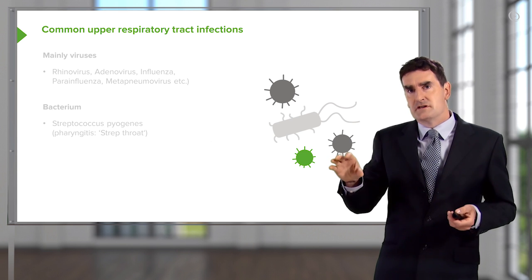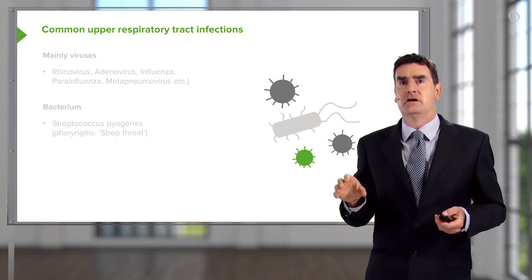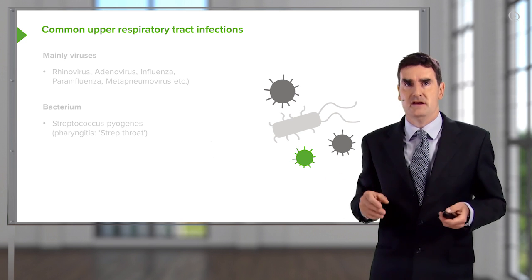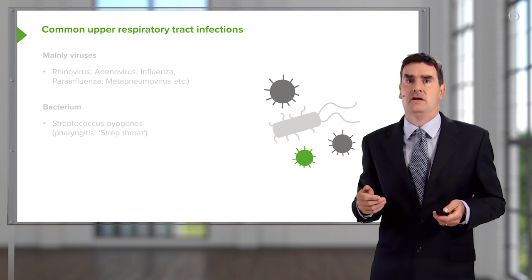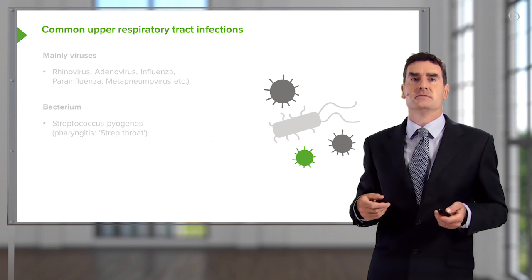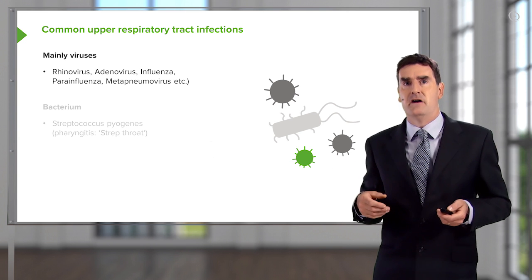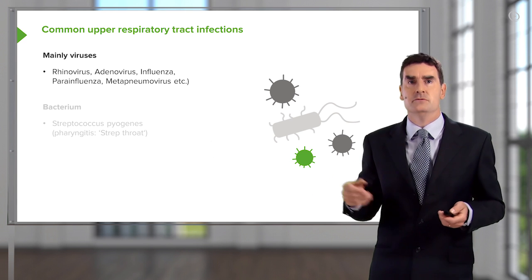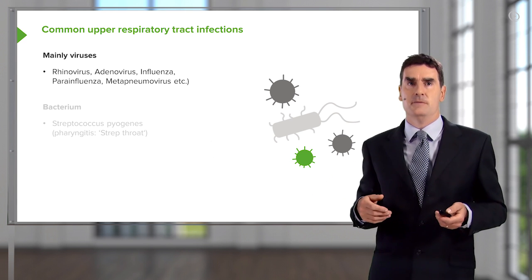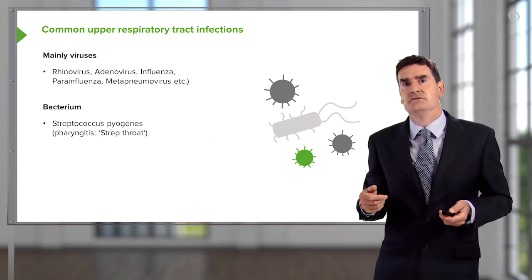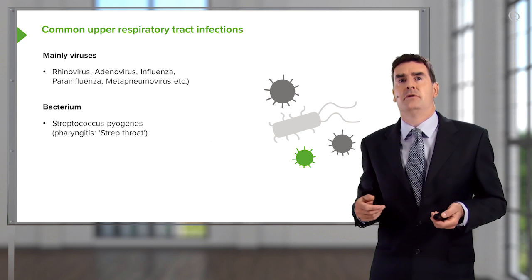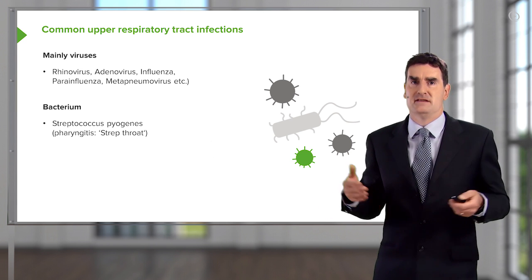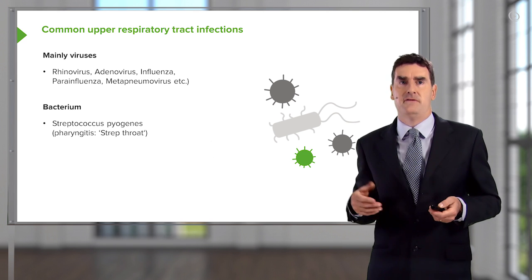Before discussing pneumonia further, I'll briefly cover upper respiratory tract infections. These are incredibly common — we've all had colds and will get repeated colds over time. These are mainly due to viruses: rhinovirus, adenovirus, various influenza viruses, metapneumovirus, and others. Occasionally they can be due to a bacterium, the commonest being Streptococcus pyogenes, which causes what everyone calls strep throat — essentially a bacterial infection of the pharynx.